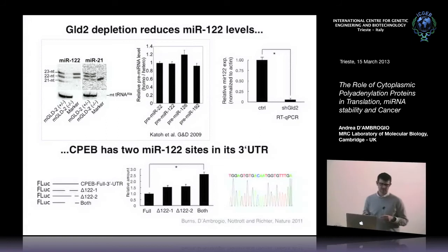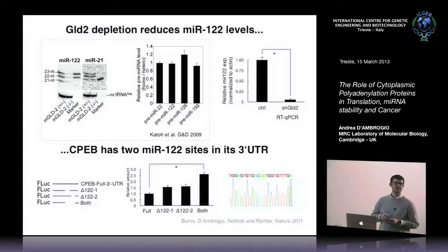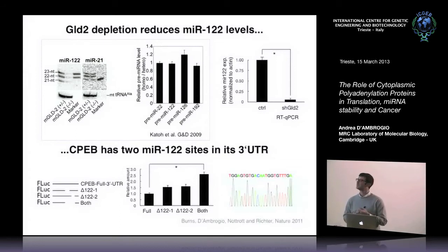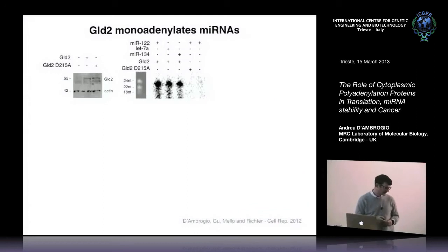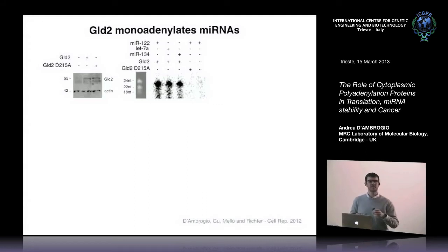The reviewers asked us to demonstrate that GOLD2 monoadenylates microRNA and that we can find monoadenylated microRNA in cells. We could sequence it out of the cells. I then did an experiment overexpressing GOLD2 and immunoprecipitating it — either the wild-type or the catalytically inactive version — then mixing it with the microRNA and gamma-ATP. miR-122 and other microRNAs did get monoadenylated, while the catalytically inactive version of GOLD2 cannot monoadenylate microRNAs.